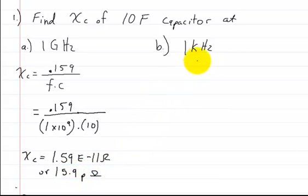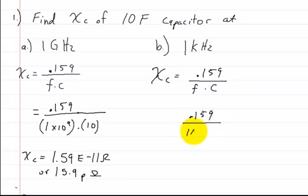So now let's go to the next one over here. How about at 1 kilohertz? Let's see what happens here. So at 1 kilohertz, let's write down the formula. Capacitive reactance is equal to 0.159 over the frequency multiplied by the capacitance. So the frequency here is 1 kilohertz. So 0.159 divided by 1 kilohertz multiplied by the capacitance, which is the 10 farads.